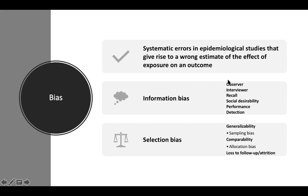Under information bias, we have observer bias, which is when an observer knows something about the hypothesis or knows something about the treatment. Therefore, they are biased based on their knowledge of the hypothesis — they probably favor the hypothesis because they think it's a solid one, or they favor the treatment because they think it's a good treatment.